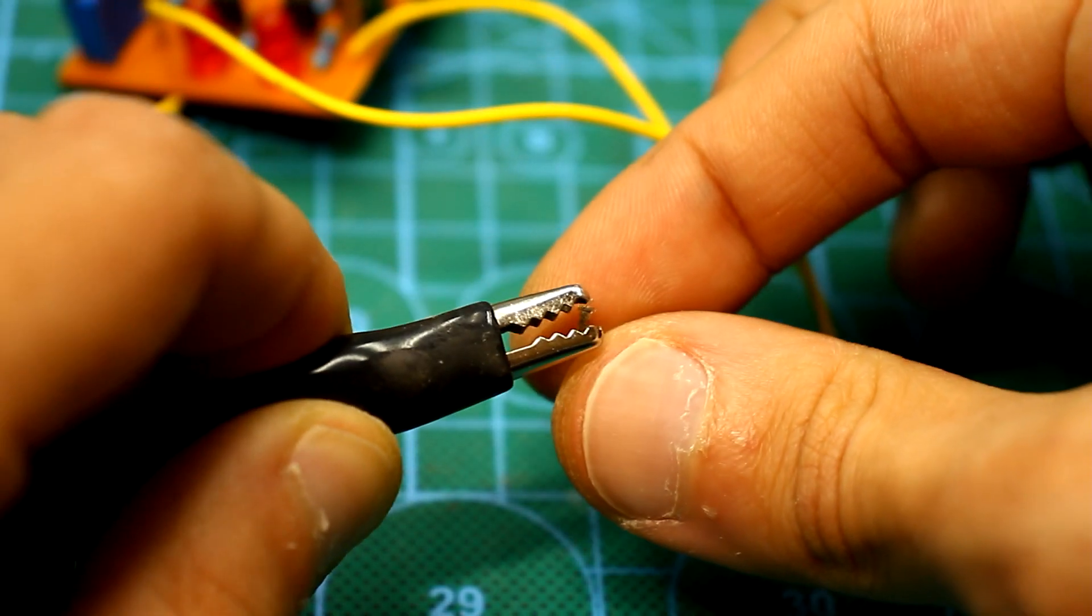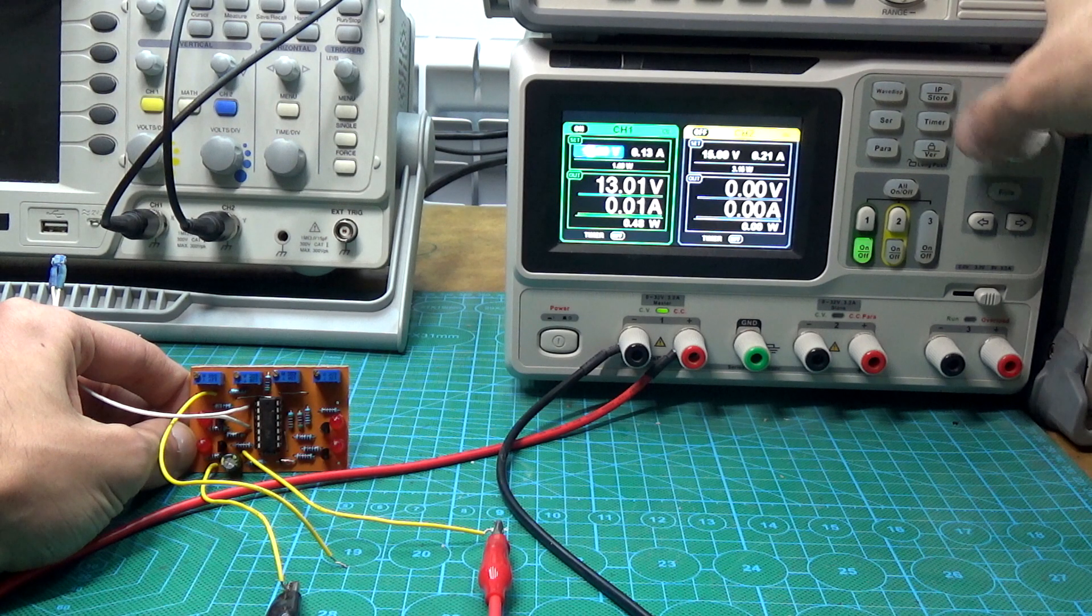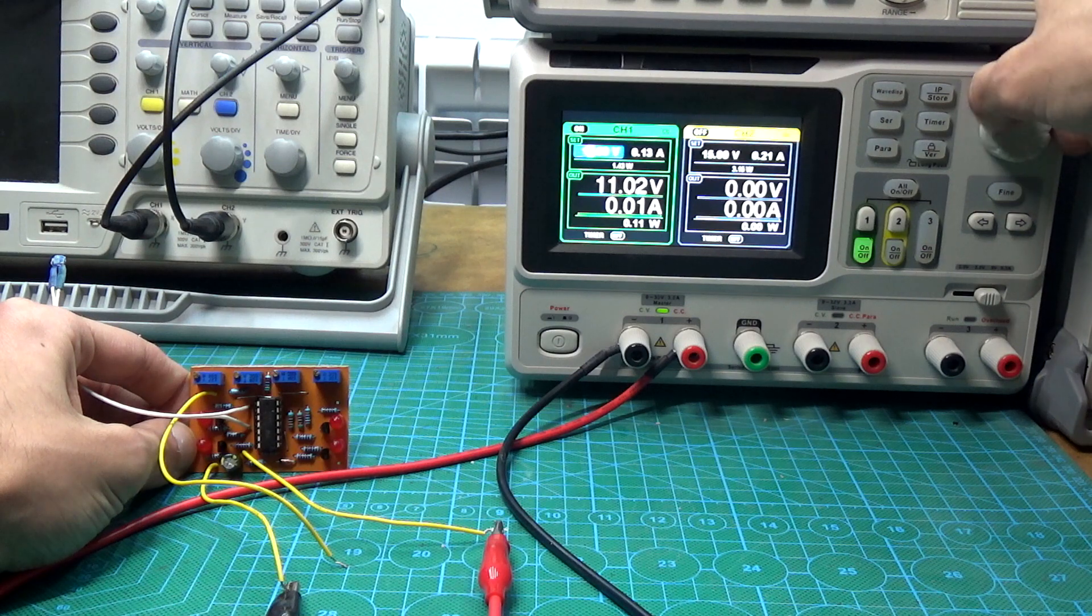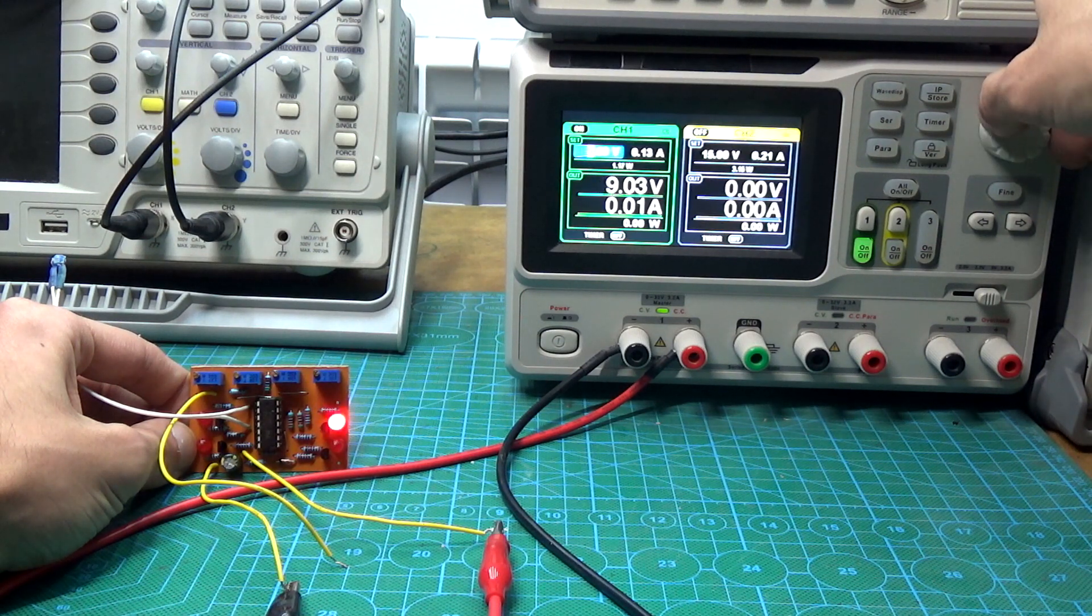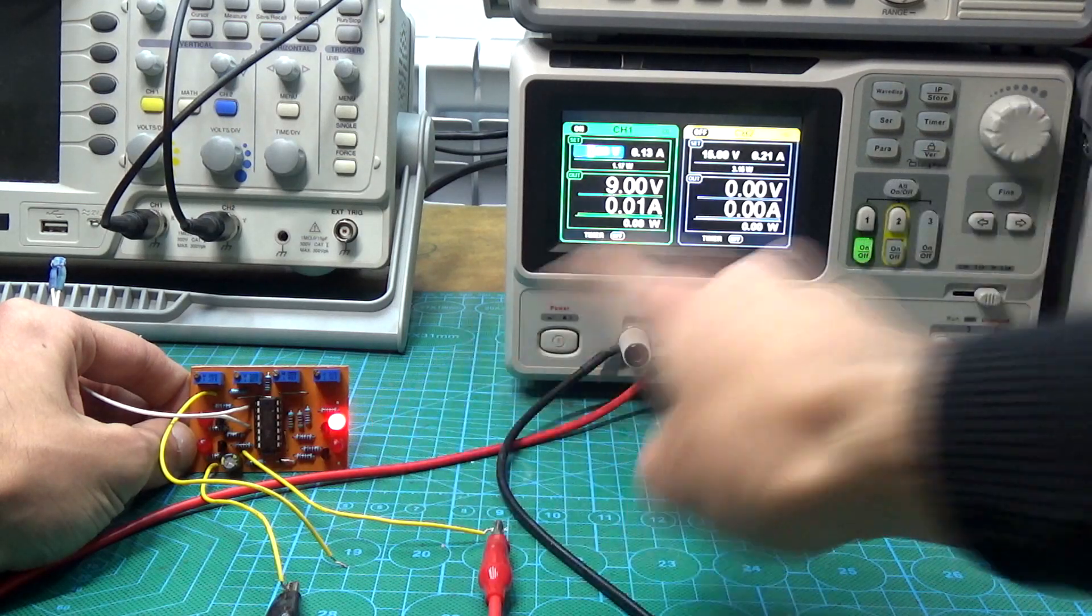We connect the device to the laboratory unit. By the first tuning resistor, we set low voltage protection. For this, we set, for example, 9.5V on the laboratory unit and slowly rotate the tuning resistor until the LED lights up.